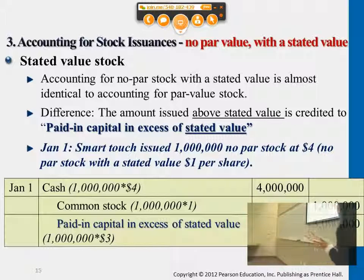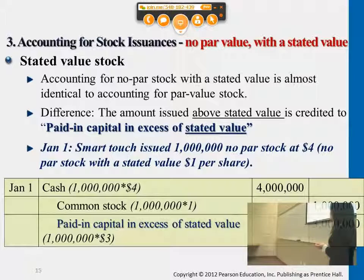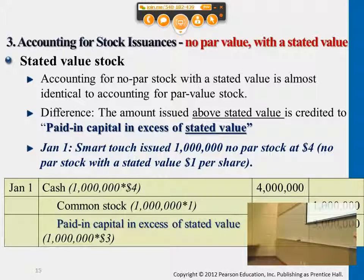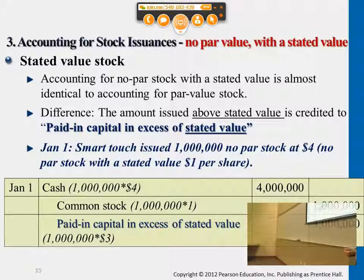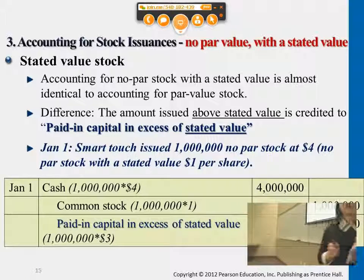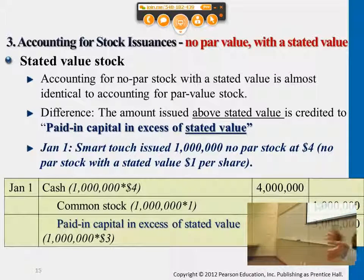In this example, the issue price of the common stock is $4 and the stated value of the stock is $1. The difference between the market price of $4 and the stated value of $1 — that $3 — is considered a premium under the account 'paid-in capital in excess of stated value.' This $3 is the difference between market price and stated value, and all of it is part of equity. We just want to separate what part is stated value and what part is above it.